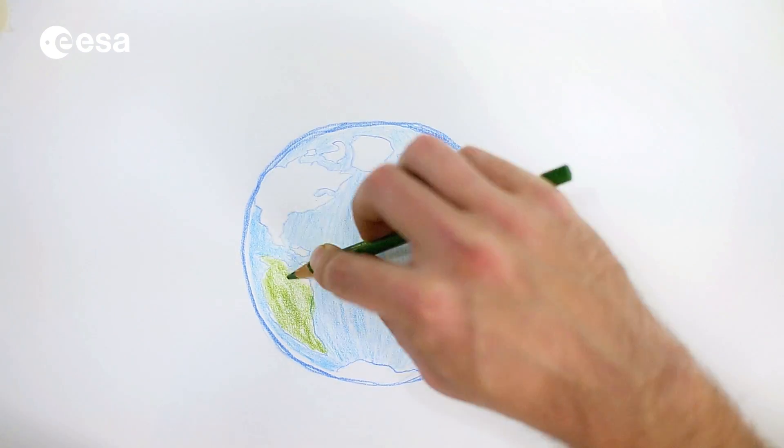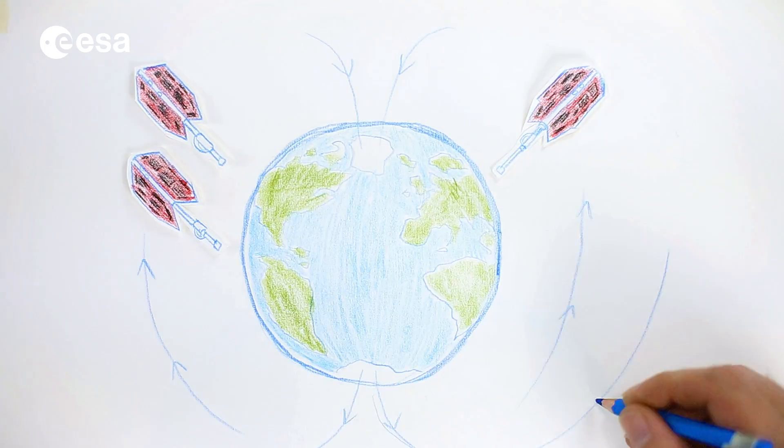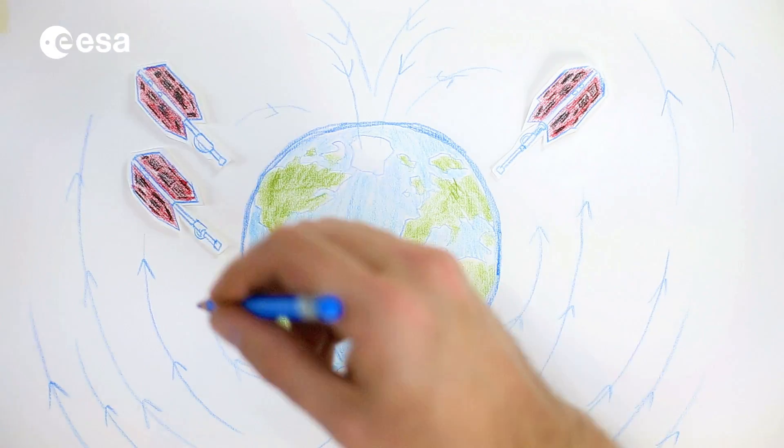The SWARM satellites orbit the globe on different floors and are precise enough to produce the first 3D map of the magnetic Earth.